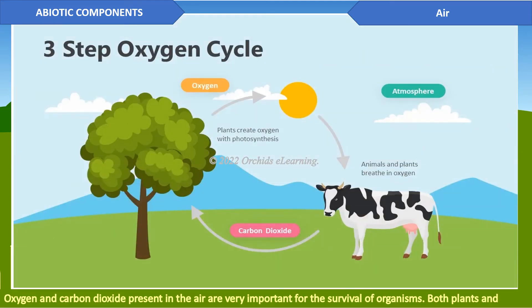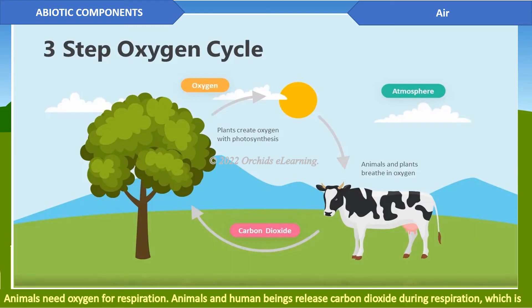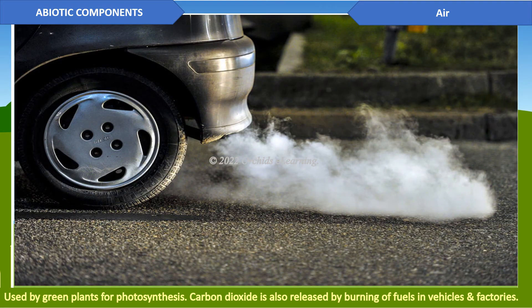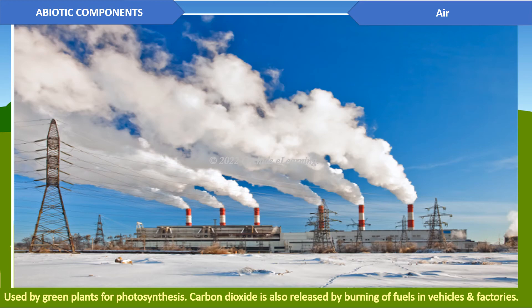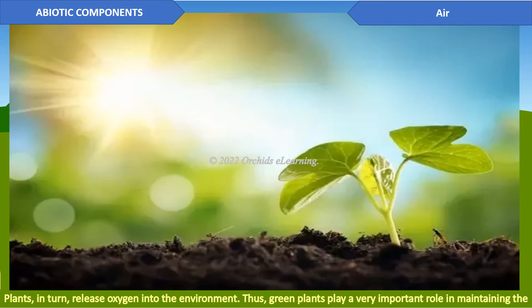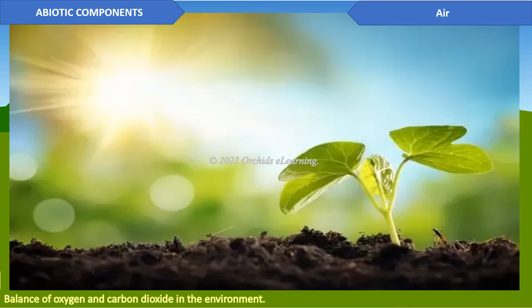Oxygen and carbon dioxide present in the air are very important for the survival of organisms. Both plants and animals need oxygen for respiration. Animals and human beings release carbon dioxide during respiration, which is used by green plants for photosynthesis. Carbon dioxide is also released by the burning of fuels in vehicles and factories. Plants in turn release oxygen into the environment, playing a very important role in maintaining the balance of oxygen and carbon dioxide.